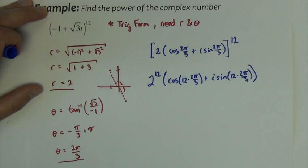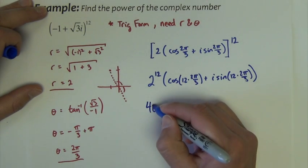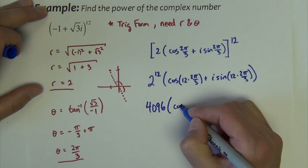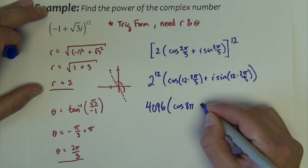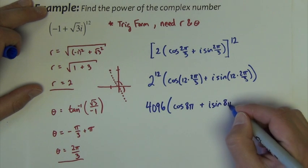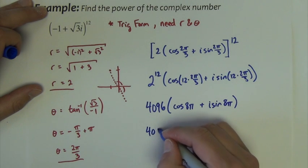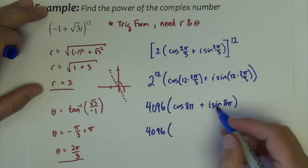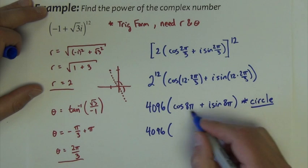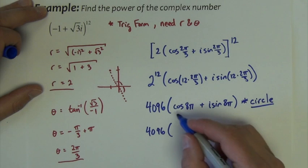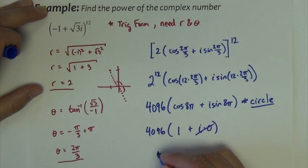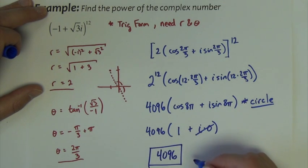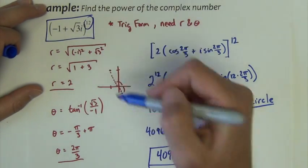So, 2 raised to the 12th power is 4,096. The angle becomes 12 times 2π/3: 12 times 2 is 24, divided by 3 is 8, so it's cosine(8π) + i sine(8π). Using the unit circle, cosine of 8π is 1 and sine of 8π is 0, so the i sine term goes away. The result is 4,096 times 1, which equals 4,096. That is the answer to taking this complex number to the 12th power.